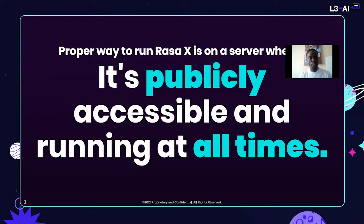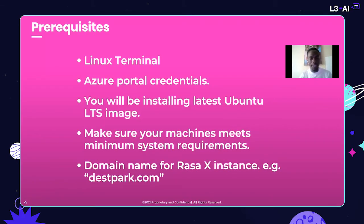The proper way to run Azure X is on a server when it's publicly accessible and running at all times. The prerequisites are that you'll need a Linux terminal, your Azure portal credentials, the latest Ubuntu LTS image, a machine that meets minimum requirements, and also a domain name.